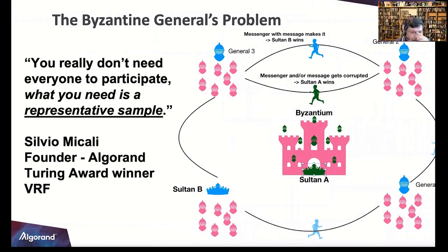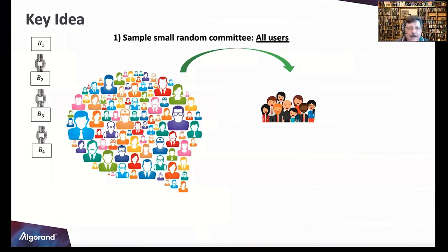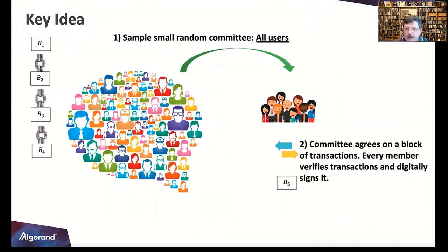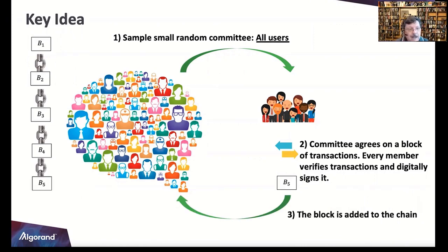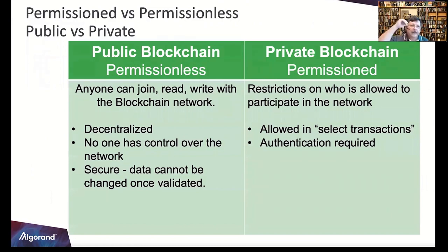Silvio Micali, our founder and Turing Award winner, figured it out with the VRF — Verifiable Random Function. You really don't need everyone to participate; what you need is a representative sample. A small random committee of all users is selected, the committee agrees on the block of transactions, every member verifies and digitally signs it. The protocol checks for sufficient funds and double spending. If it all looks good, the block is added — and every five seconds this repeats.